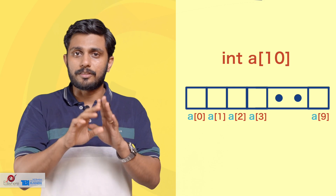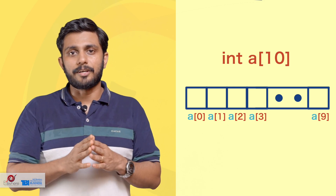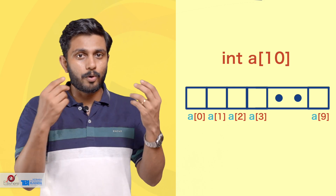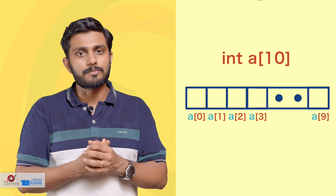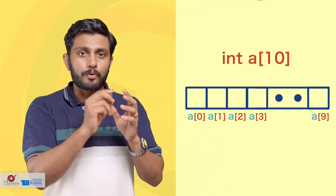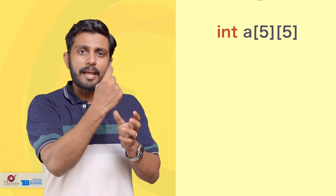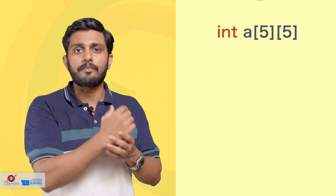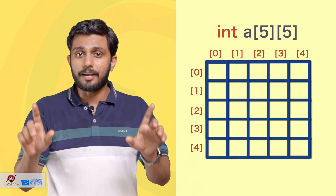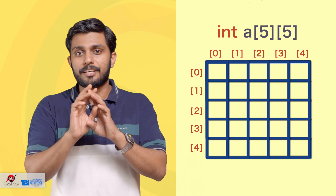So we have to specify the 2D array — we specify the rows and the columns. If we initialize a two-dimensional array as A[5][5], here we specify 2 rows and 5 columns. We create a grid structure.